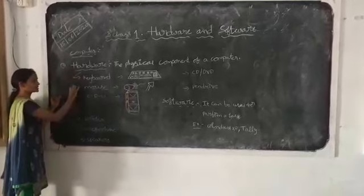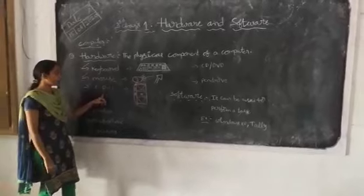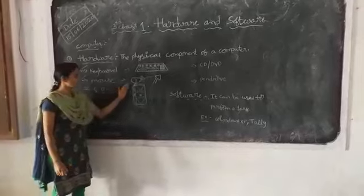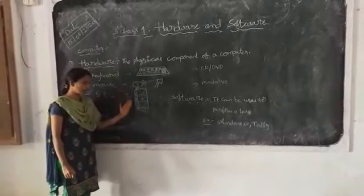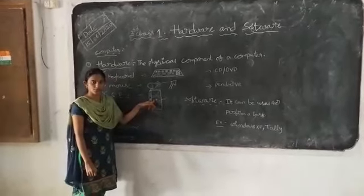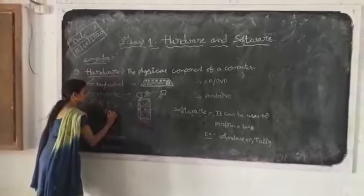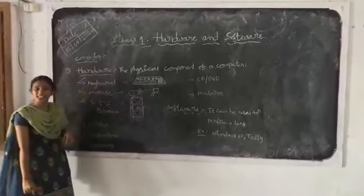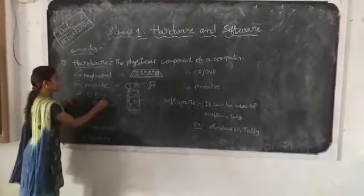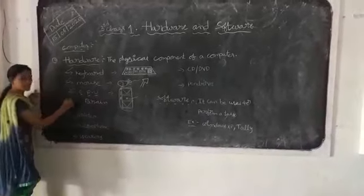Third one, CPU. CPU means central processing unit. The CPU looks like this. See, this button can be called as the power button. And also see, the CPU is brain of the computer. The CPU, it can perform all works in the system.